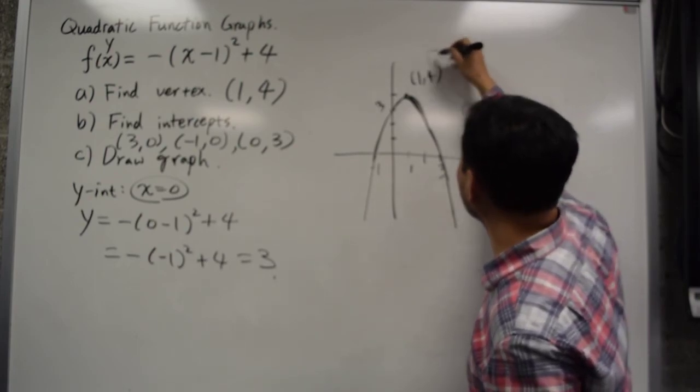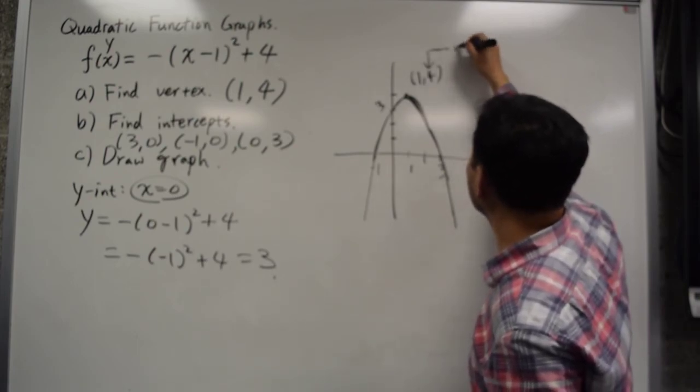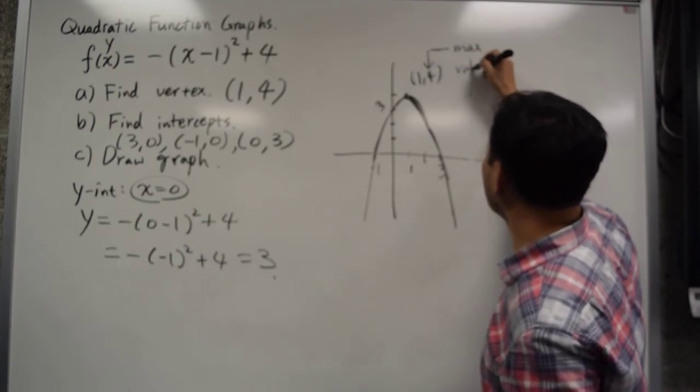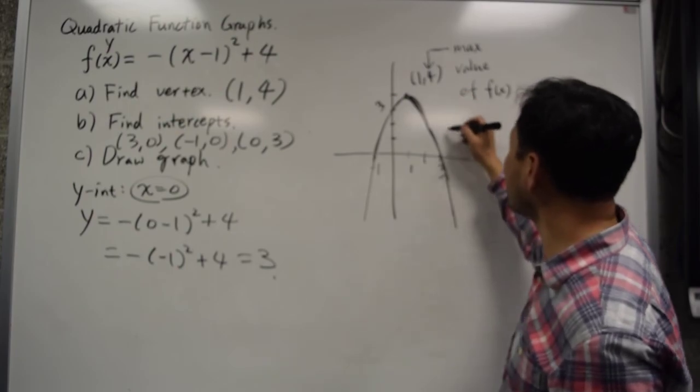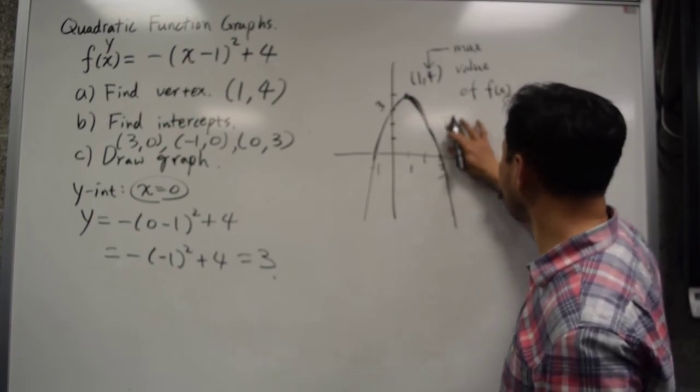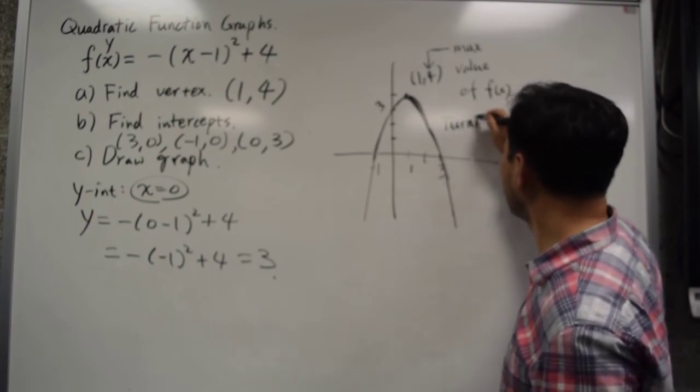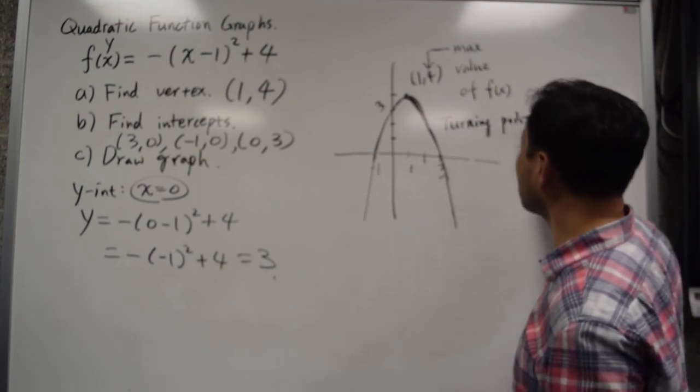So you can say this 4 here is the max value of f of x. Sometimes it's also called the turning point. Because that's where the graph turns.